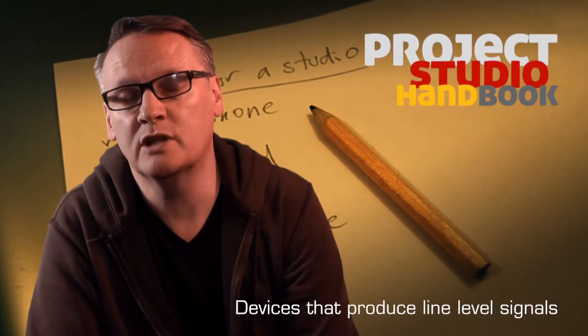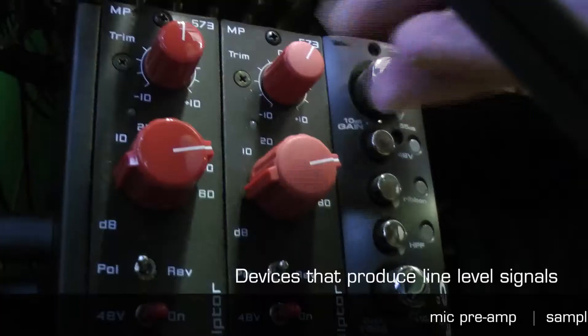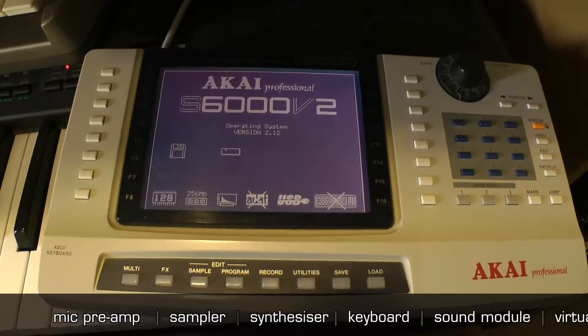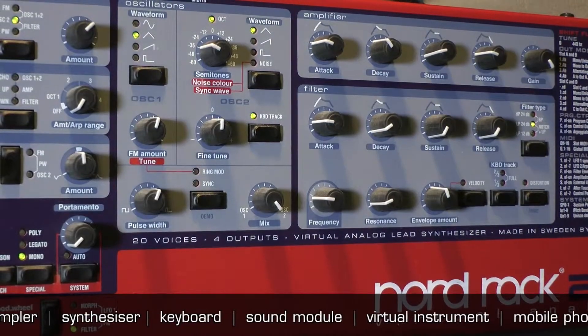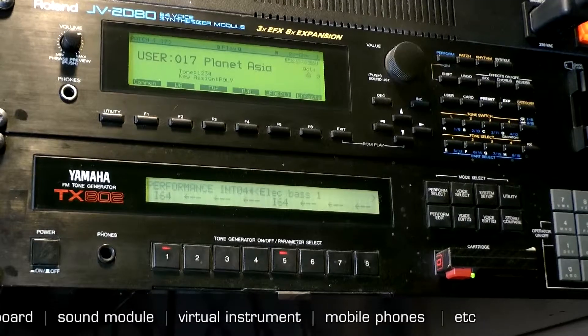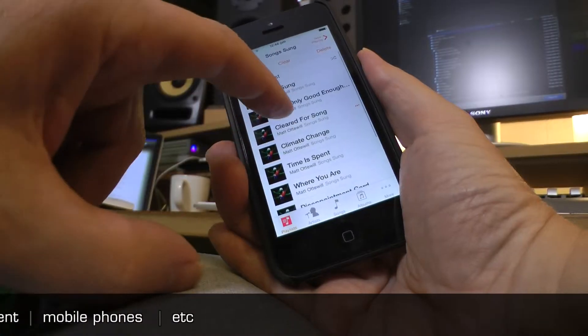Devices which produce line level signals include microphone preamplifiers, electronic instruments such as samplers, synthesizers, keyboards, sound modules, virtual instruments, and mobile phones.